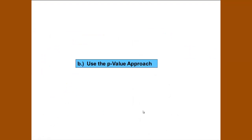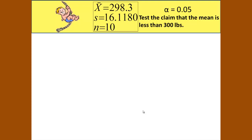Now we will do the same problem using the p-value approach. We still have the same general information that the sample mean x̄ = 298.3, the sample standard deviation is 16.1180, and n = 10. Our hypotheses are the same: that μ < 300 pounds as your alternate and that the null is μ ≥ 300 pounds.